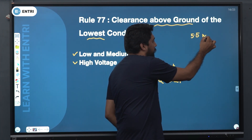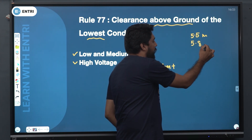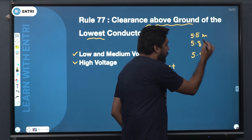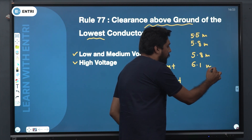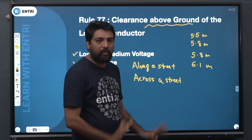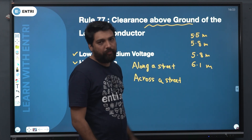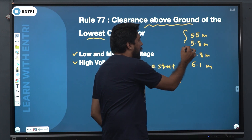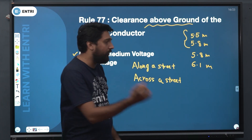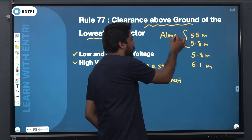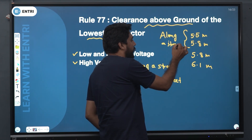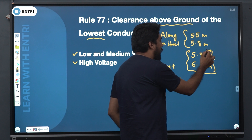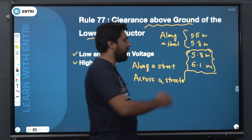The values are: 5.5 meters, 5.8 meters, and 6.1 meters. The four values are: 5.5 and 5.8 for along a street, and 5.8 and 6.1 for across a street. So 5.5 and 5.8 relate to along a street, and 5.8 and 6.1 relate to across a street.